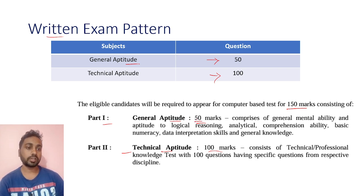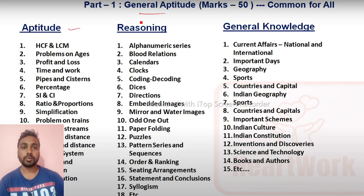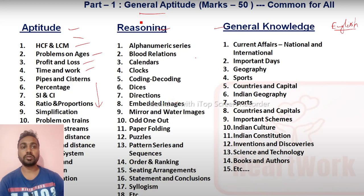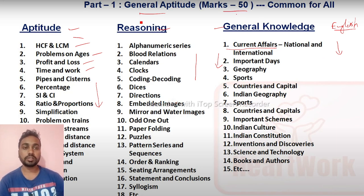The General Aptitude syllabus is common for all — Diploma and ITI Technician all branches. You will get aptitude questions, reasoning questions, general knowledge, and English grammar. For aptitude, topics include HCF, LCM, problems on age, profit and loss, time and work. There are topics for reasoning and GK as well. Last year around five to six questions came from English grammar, so you need to cover that too. This is 50 marks, 50 questions, common for all branches.